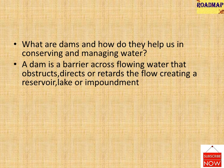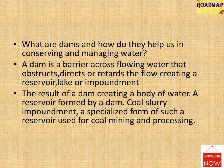A dam is a barrier across flowing water that obstructs, directs, or retards the flow, often creating a reservoir, lake, or impoundment. Dams mostly have a section called a spillway or weir over which, or through which, it is intended that water will flow either intermittently or continuously. Dams are classified according to their structure, intended purpose, or height.